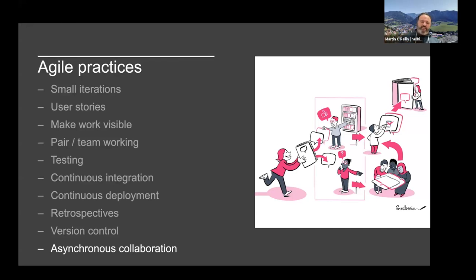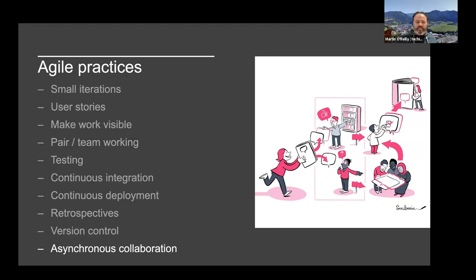The original agile manifesto and principles from 2001 focused very strongly on synchronous communication and in-person collaboration. Nowadays, so much of our work at the Turing is remote — some synchronous, but also a lot of asynchronous collaboration. In the wider open source community, or in projects like the Turing Way, we've all got different commitments on our day jobs, so getting the whole team together every day is really difficult. The open source community has developed a range of tooling and practices for effective asynchronous collaboration with only a small overhead compared to working together synchronously.